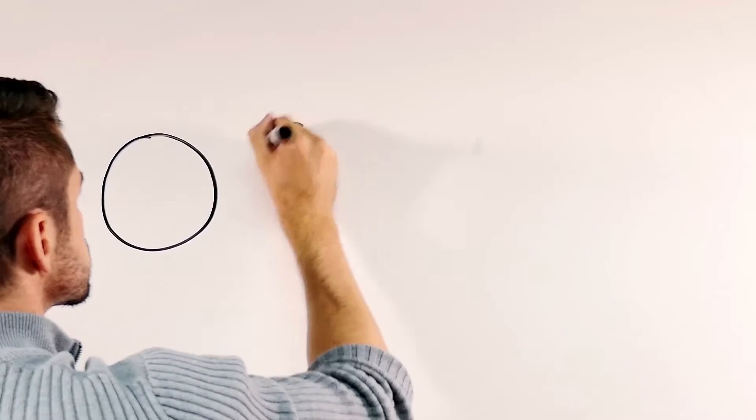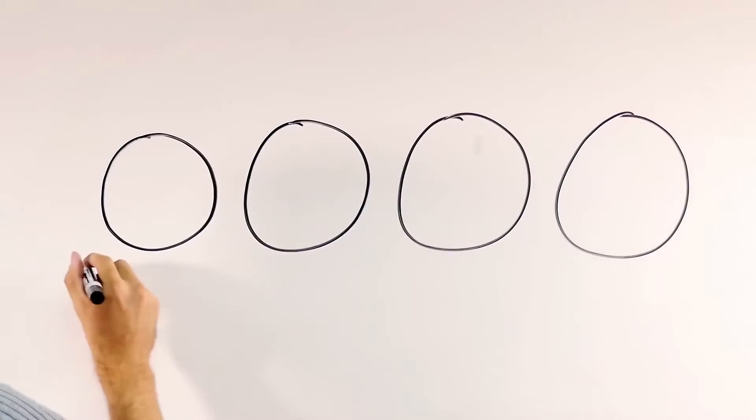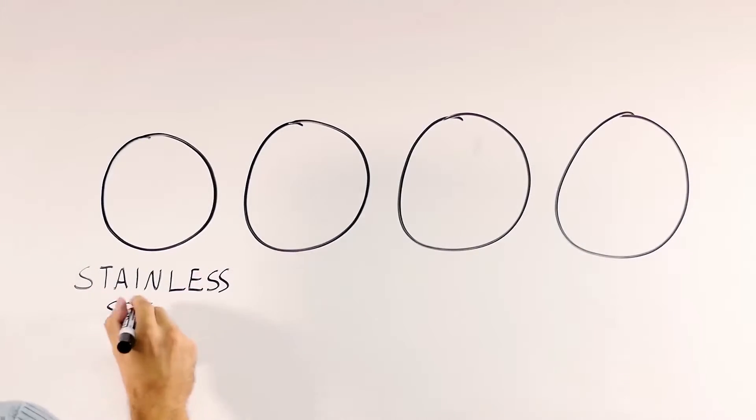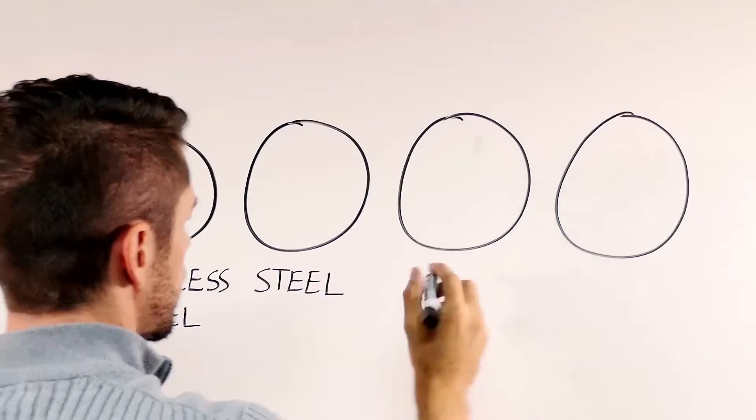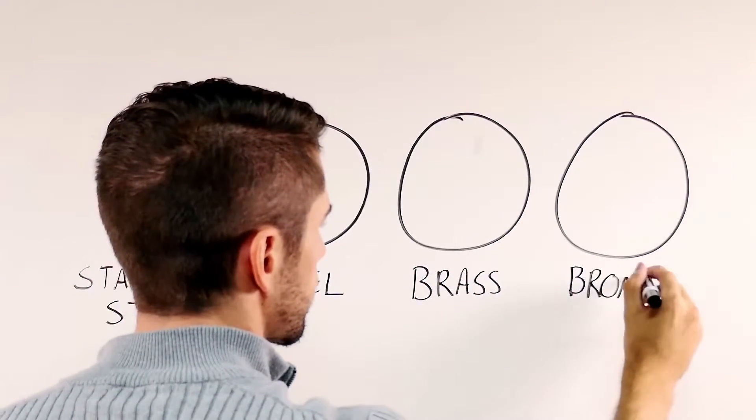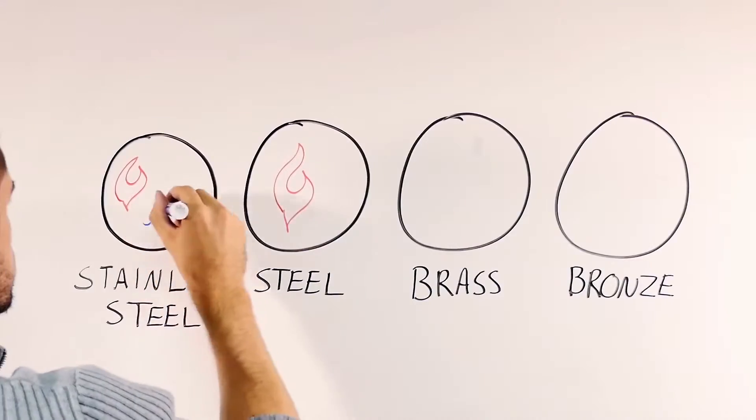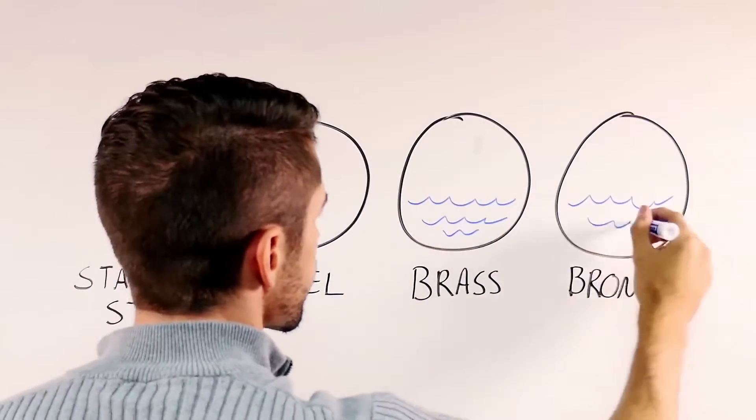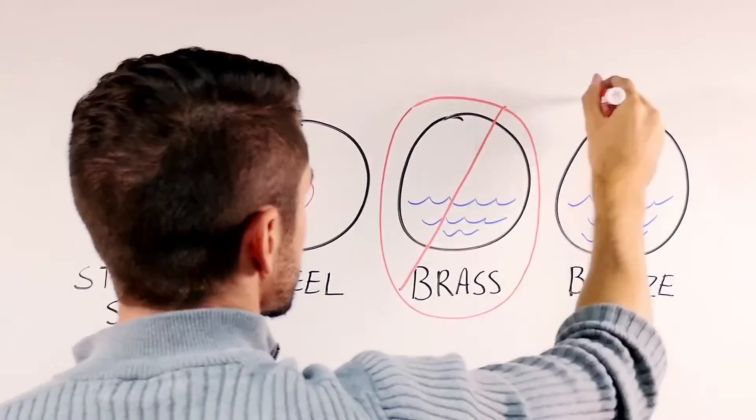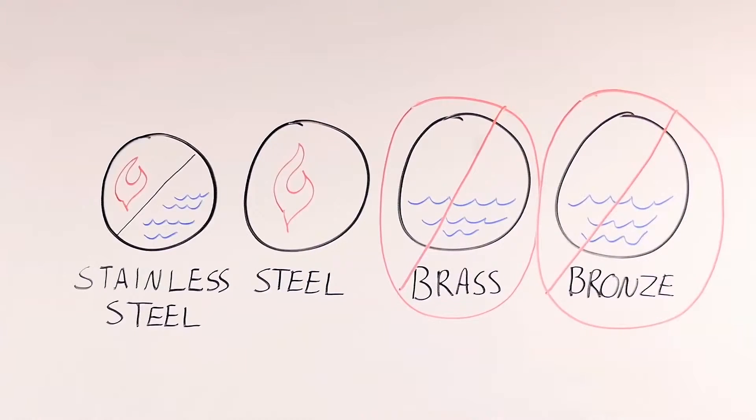Hinges for fire doors must be steel, ball bearing, and of a certain size and quantity. Other types of hinges and pivots are allowed if they are tested and listed for use on a fire door. Spring hinges are allowed for fire doors but they do not control the door as well as a door closer and improperly adjusted spring hinges have been a factor in numerous fires.